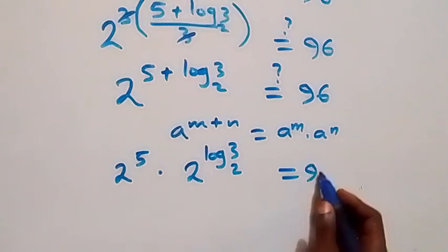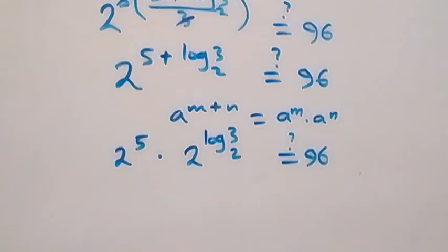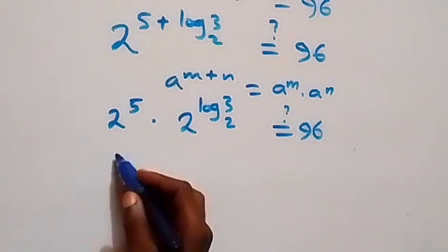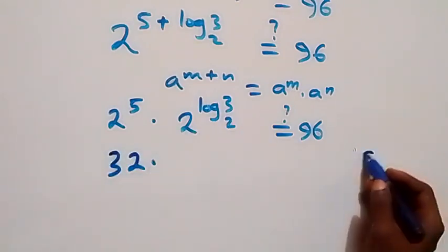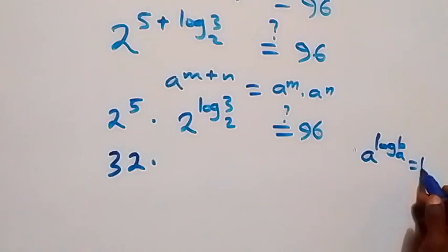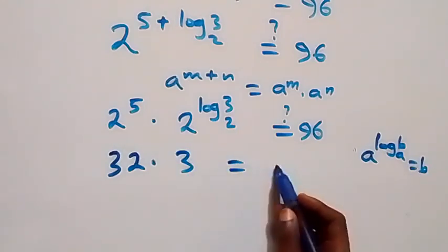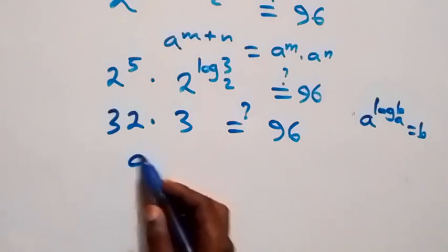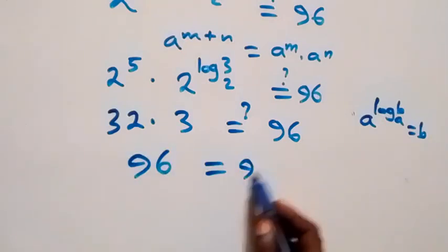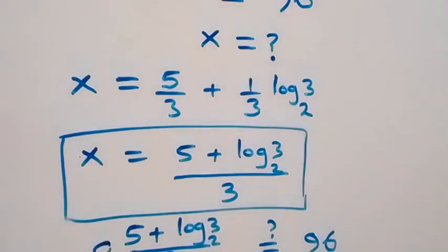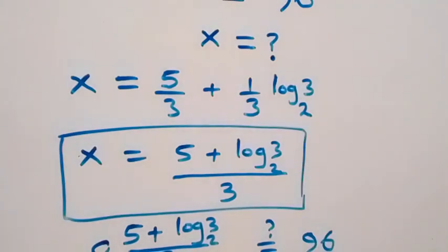Applying the law of indices: 2^(5 + log₂3) = 2⁵ × 2^(log₂3). Here 2⁵ = 32, and using the identity a^(log_a(b)) = b, we get 2^(log₂3) = 3. So 32 × 3 = 96, which equals the right-hand side. Hence x = (5 + log₂3)/3 satisfies the given equation.